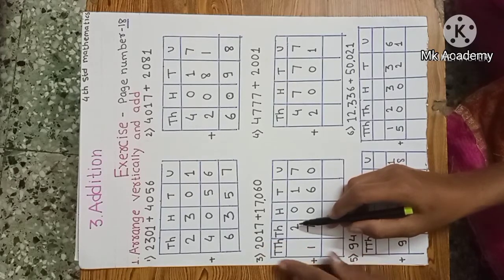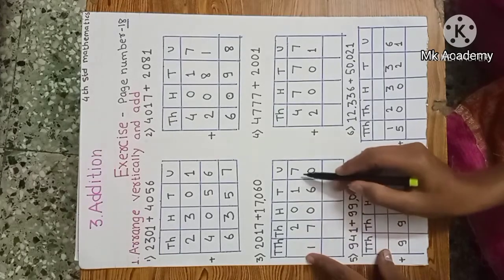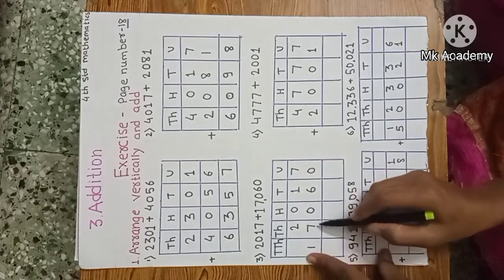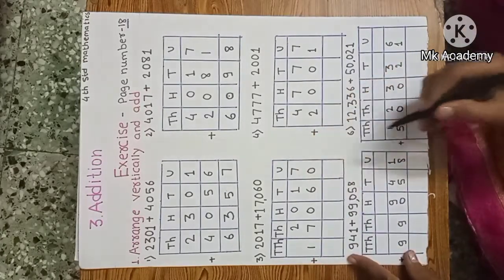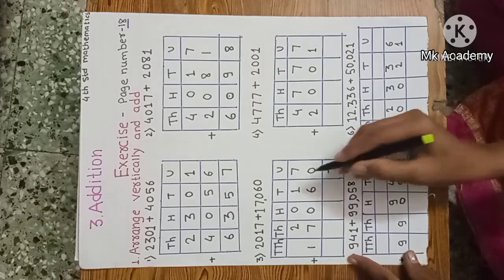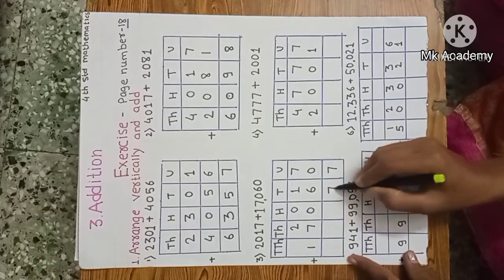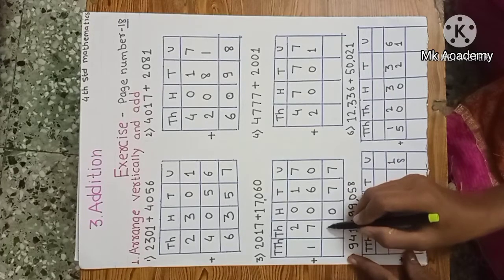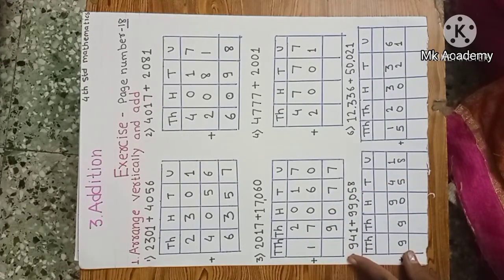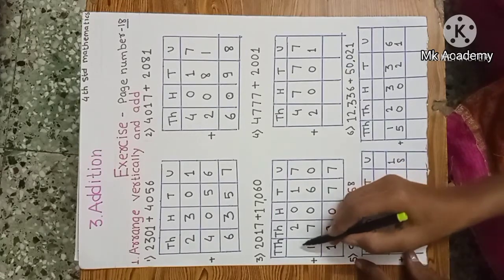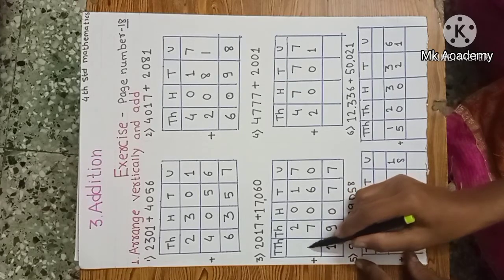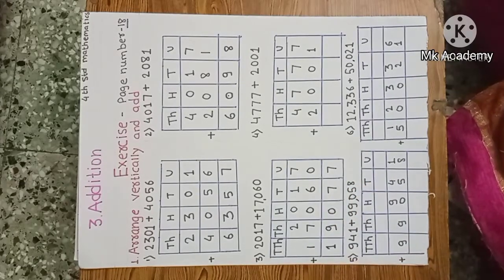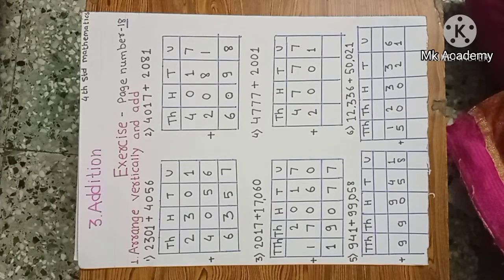Third example: 2017 plus 17,060. We write down first — 2017 is a 4-digit number and 17,060 is a 5-digit number. Start from unit place: 7 plus 0 is 7; then tens: 1 plus 6 is 7; hundreds: 0 plus 0 is 0; thousands: 2000 plus 7000 is 9000; and ten-thousands: 1. The answer is 19,077, which is a 5-digit number.